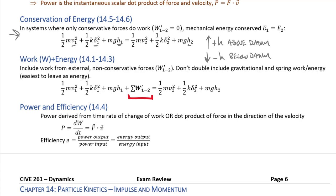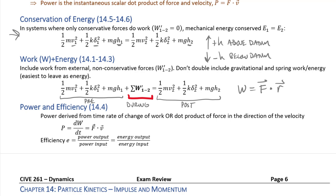Keep in mind that the initial condition — position one — is the pre state, before the distance over which something happens. Position two is the post state, and the work term W-prime is what happens during. Work in the most general sense is a scalar value equal to the product of force and distance. Work can be positive or negative — if the force opposes the displacement, the work is negative. Friction is a classic example of a negative work term.